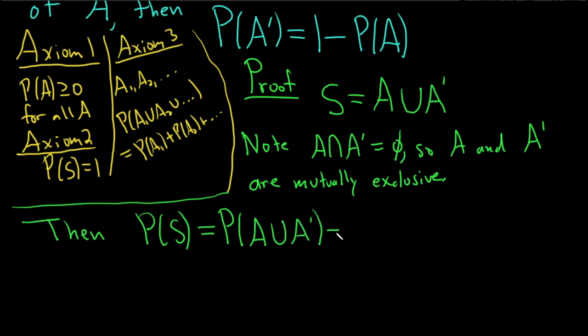And now this is equal to the probability of A plus the probability of A prime. And this is by axiom 3. This is axiom 3. It's because these are mutually exclusive, so we can apply axiom 3.